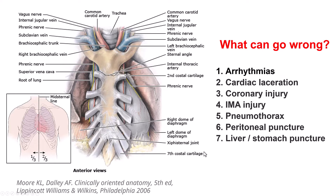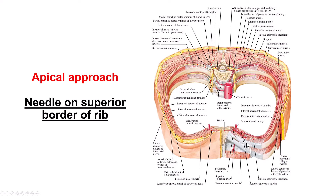For the subxiphoid, there can also be peritoneal puncture or liver and stomach puncture. Understanding the anatomy helps minimize these risks. When the apical approach is used, it is important to advance the needle just above the upper border of the rib, because the intercostal vessels course along the inferior border of the rib. Going along the superior border makes it less likely to hit those arteries.